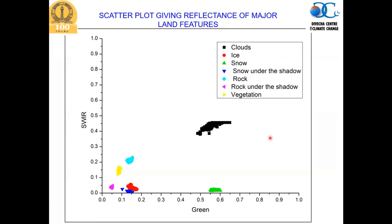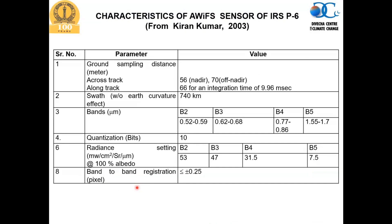You can do a simple scatter plot to understand the reflectance of major land features. With the SWIR band on one axis and the green band on the other, snow has high reflectance in the green band and low reflectance in the SWIR, occupying one space. Cloud occupies another space, ice occupies a close space, rock is in a different place, and vegetation is also different. So snow and ice have a unique space allowing us to identify snow comfortably on satellite images.